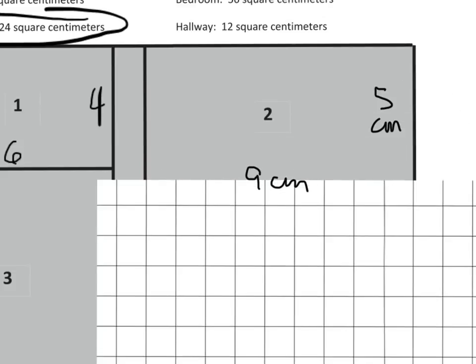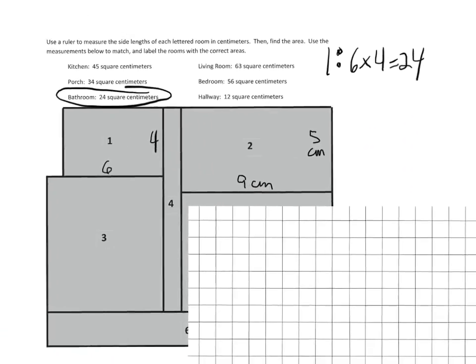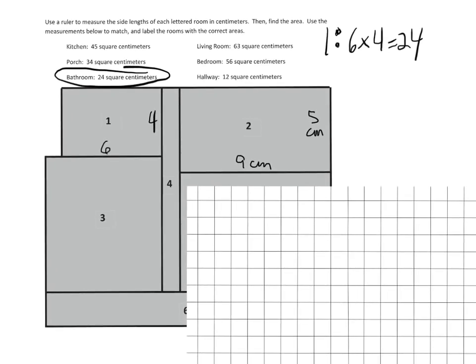And so, using our area, we know the rule. The rule is to multiply those two lengths. And so for number 2, we can see that it's 9 times 5, which is 45. And that makes it the kitchen.